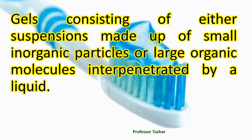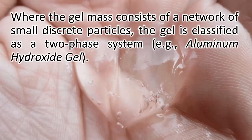Gels consist of either suspensions made up of small inorganic particles or large organic molecules interpenetrated by a liquid. Where the gel mass consists of a network of small discrete particles, the gel is classified as a two-phase system, for example, aluminum hydroxide gel.